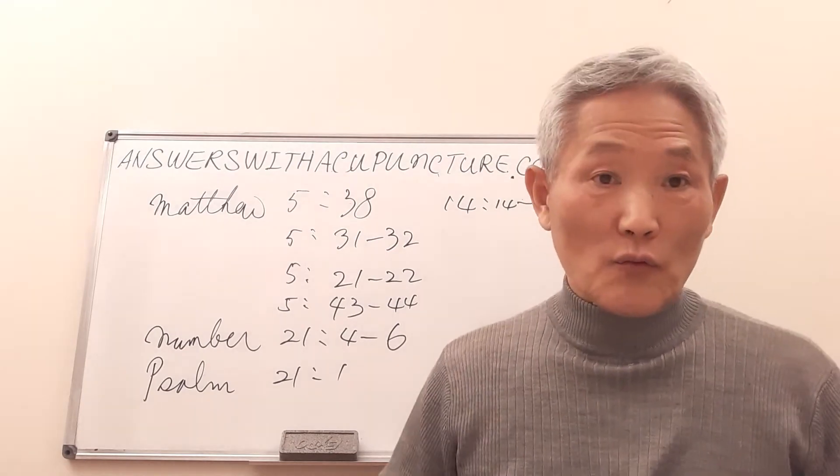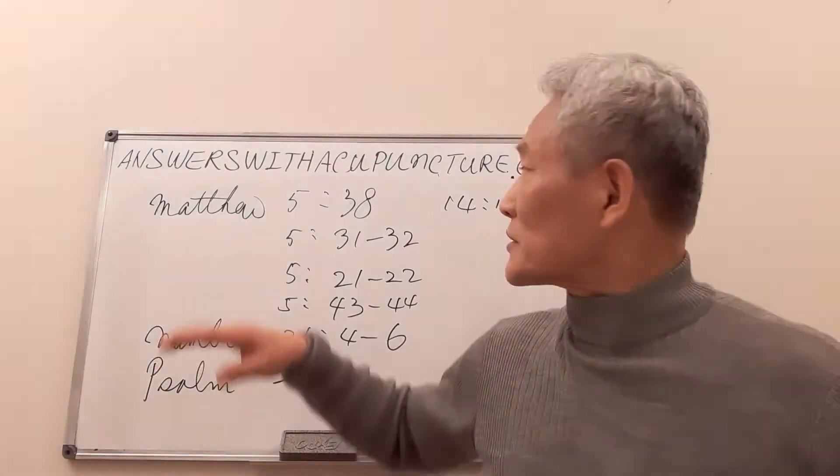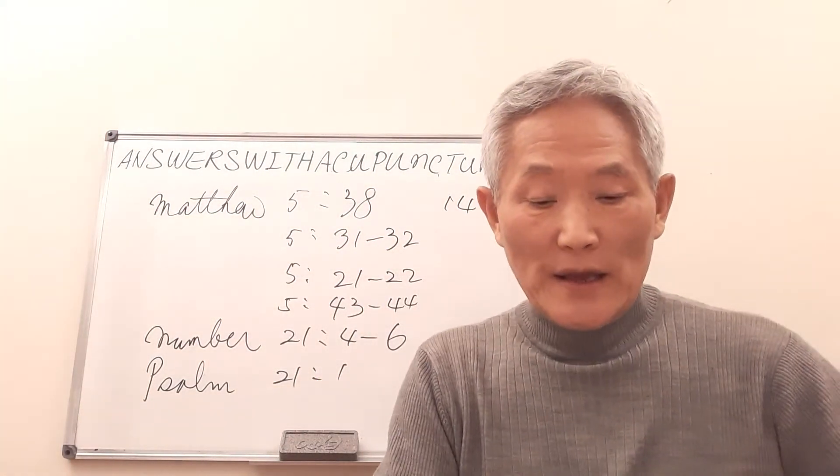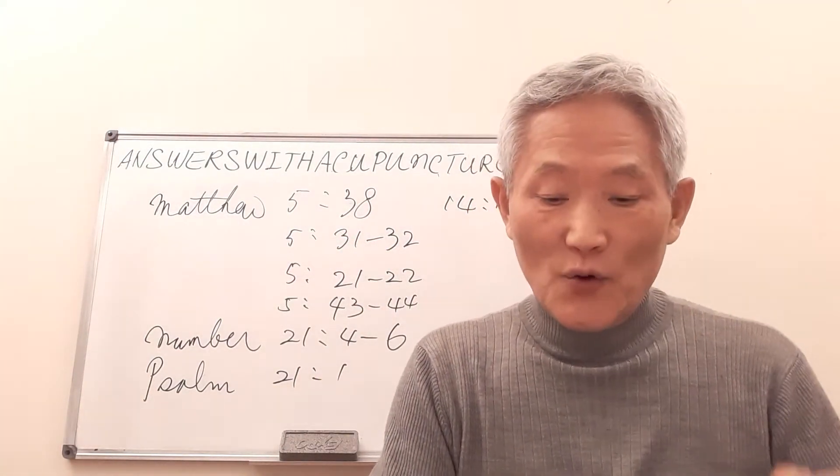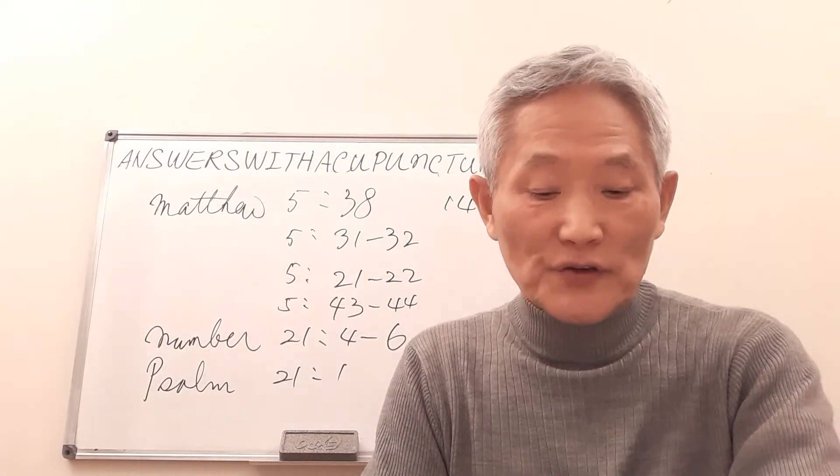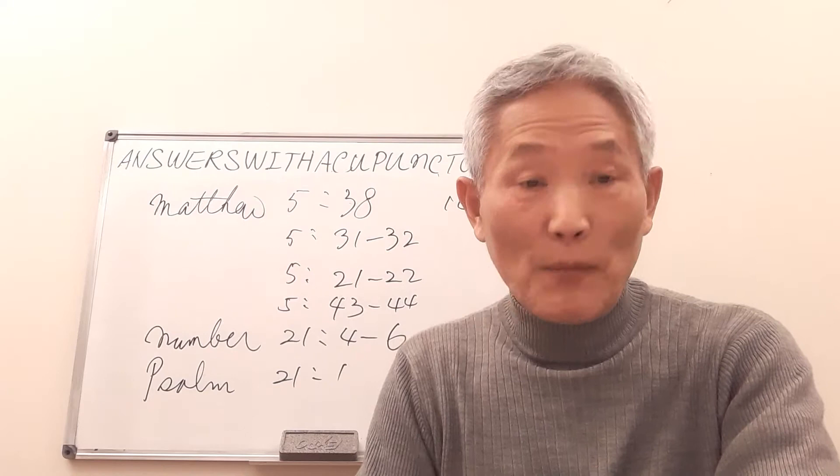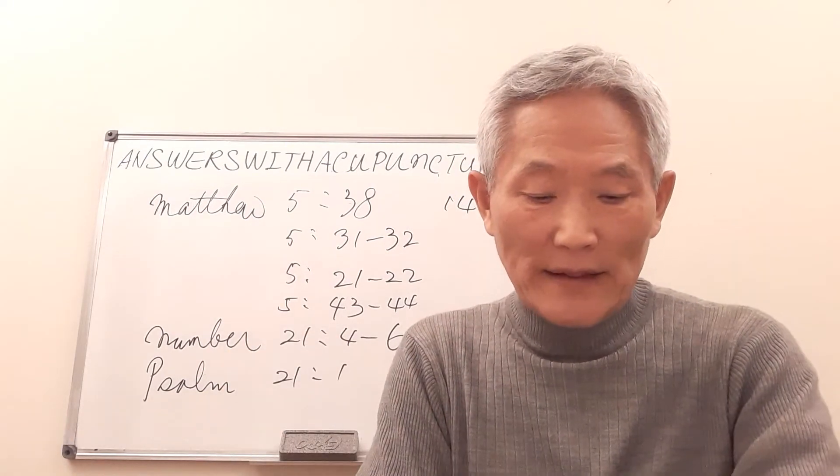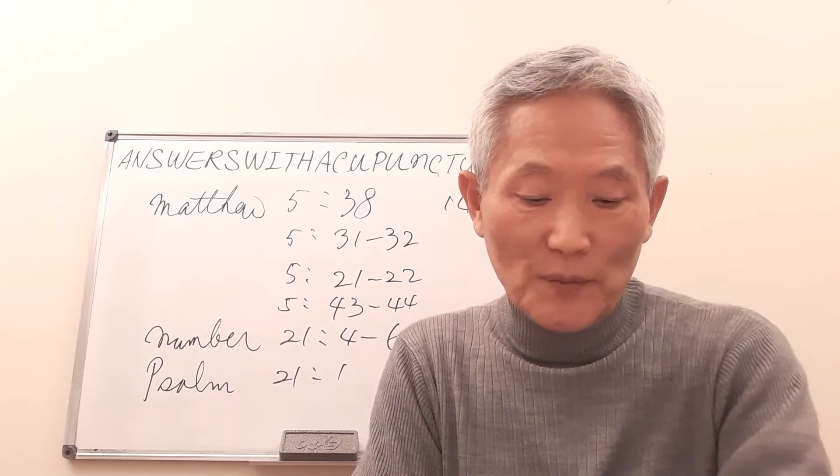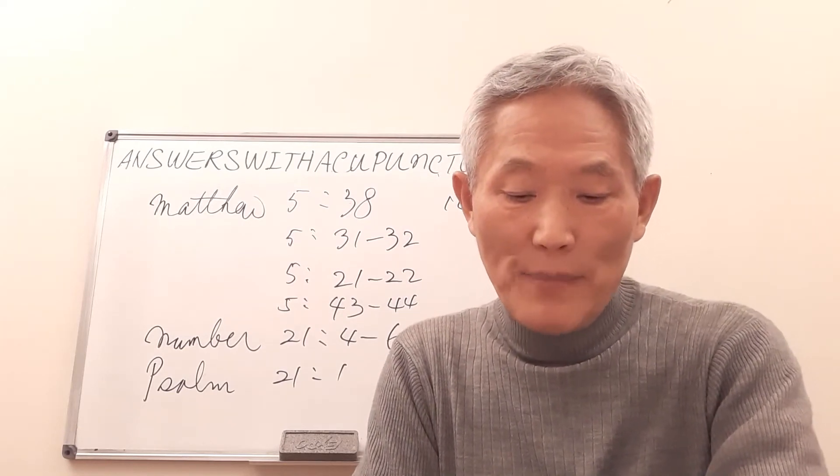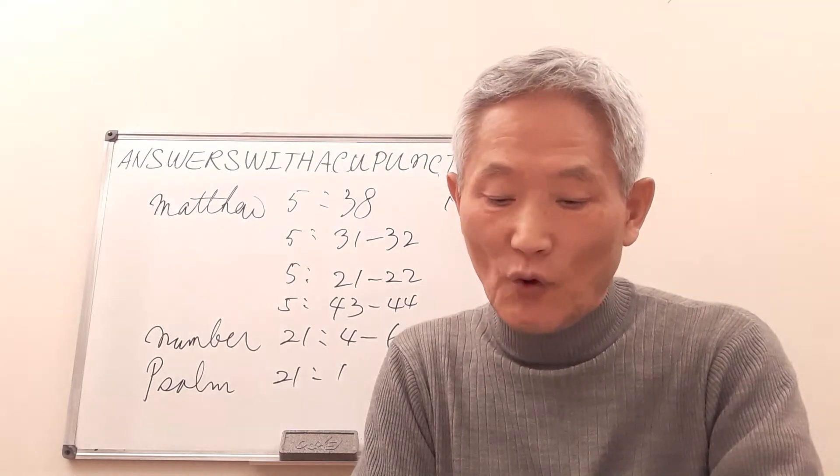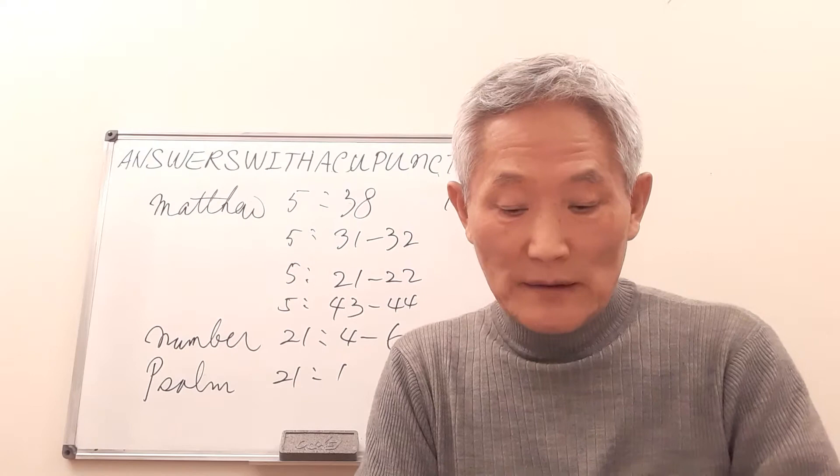Now when you go to divorce on chapter 5, 31-32: 'It was also said, whoever divorces his wife, let him give her certificate of divorce. But I say to you, that everyone who divorces his wife, except on the ground of sexual immorality, makes her commit adultery, and whoever marries divorced women commits adultery.'